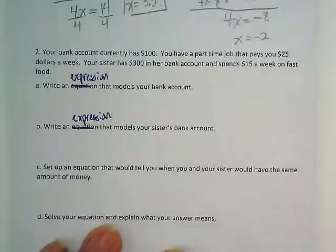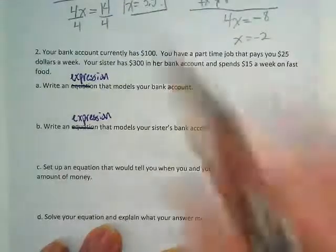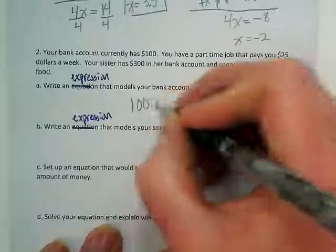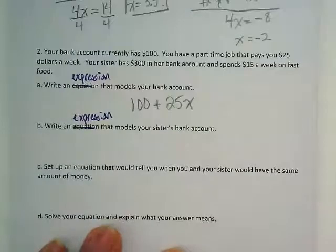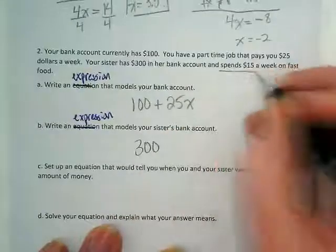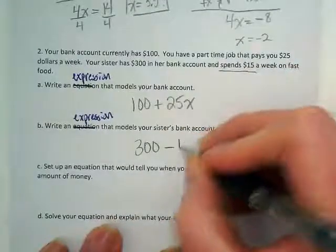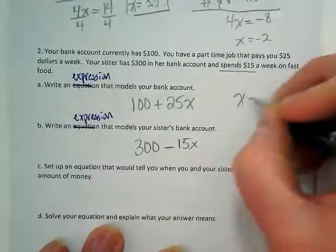So if I have a bank account with $100 in it and I get $25 a week, the expression would be 100 plus 25x. If my sister has $300 in her bank account and she's spending $15 a week, that means hers is going down by 15x. I'm using x to stand for weeks.